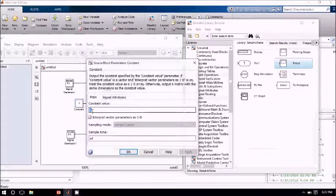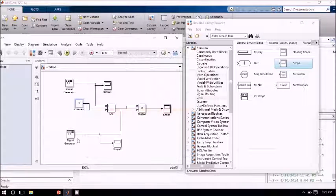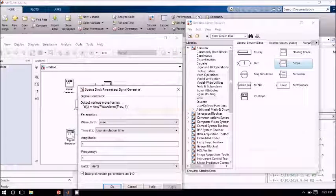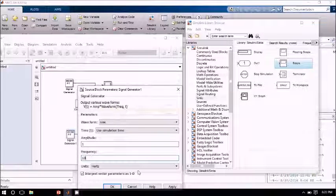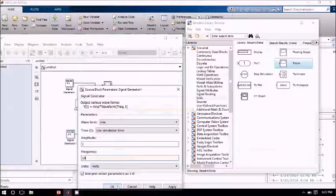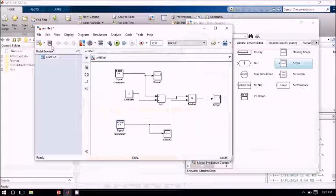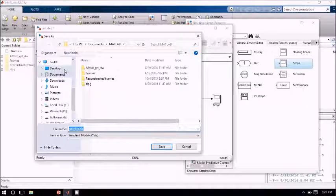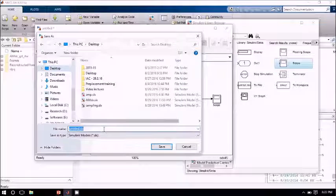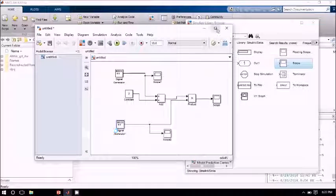And this is going to be my carrier signal, so I set my frequency to be 10 hertz because it is a high frequency signal. Now save your model. I am going to save my model, my carrier signal, maybe in a comfortable place. And now I am going to run it.